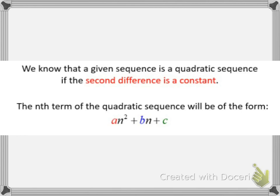We will be learning how to find the nth term of a quadratic sequence. The formula for a quadratic sequence is an² + bn + c. We know that a given sequence will be a quadratic sequence if the second row of differences is constant.